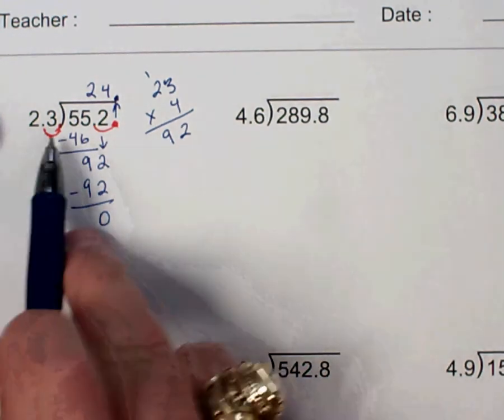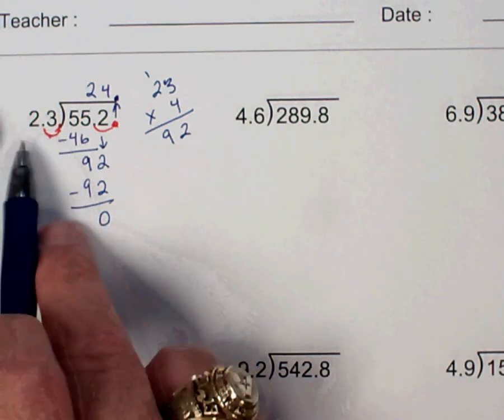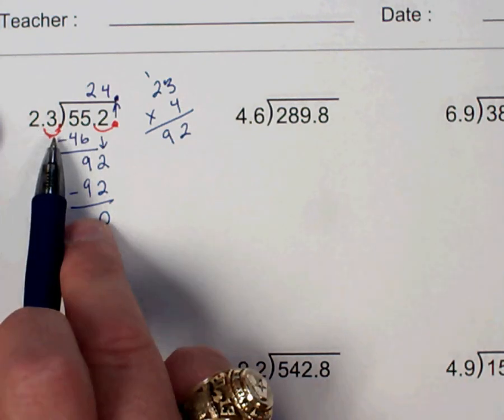But all I had to do here was just shift my decimal over until what I'm dividing by, my divisor, is a whole number.